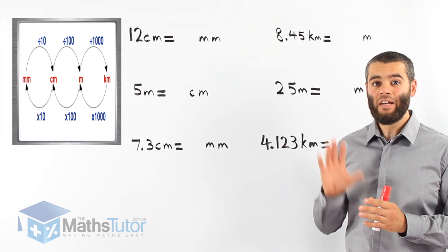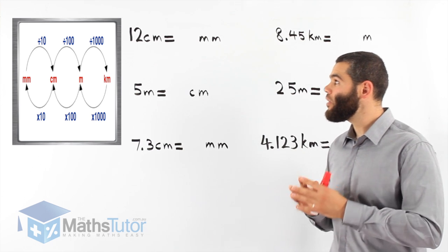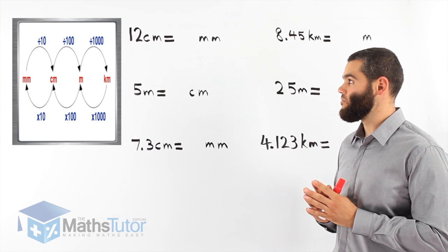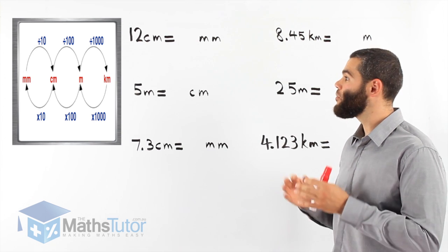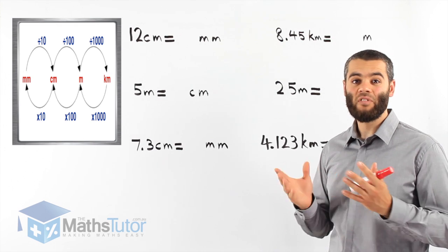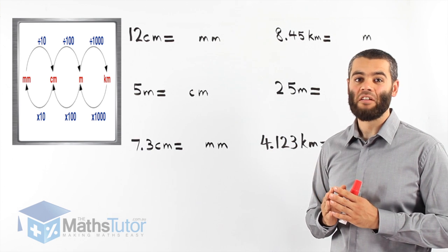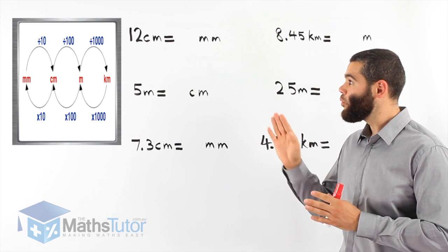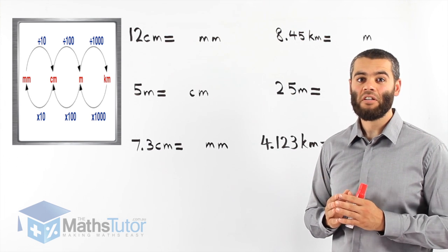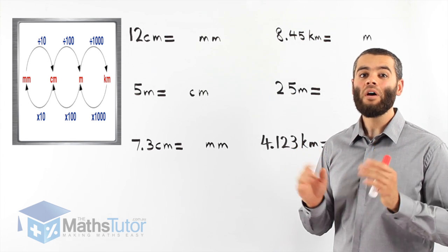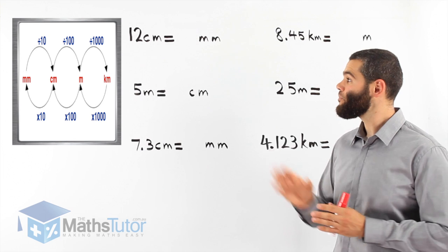First, let's understand the process. Looking at this diagram — converting units of length — we're looking at how to go from millimetres to centimetres, then from centimetres to metres, then from metres to kilometres, and back as well. We notice it's a special process. If we understand it and memorise it, no matter what question or problem we have, we'll always be able to solve it.